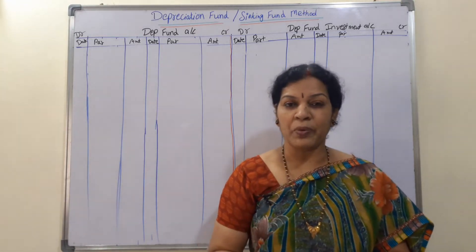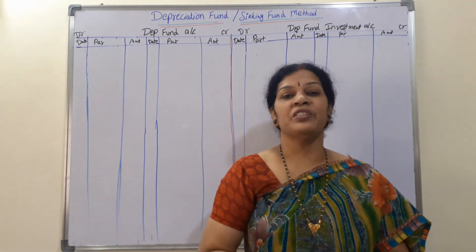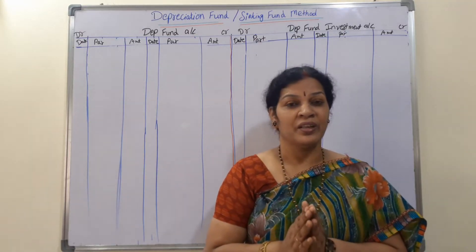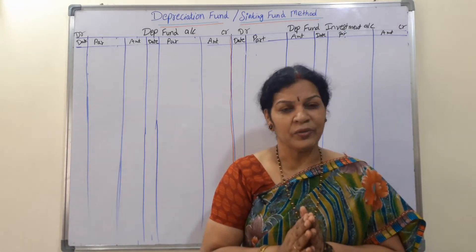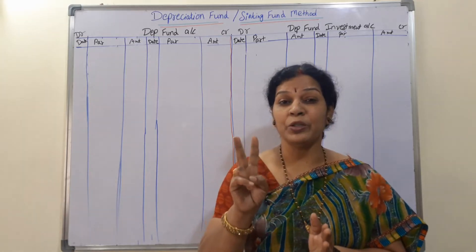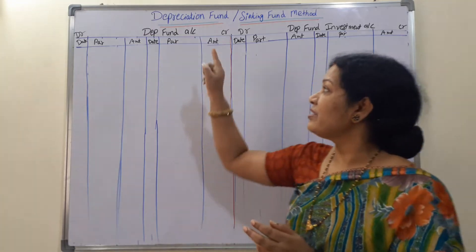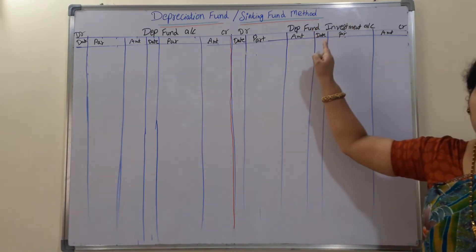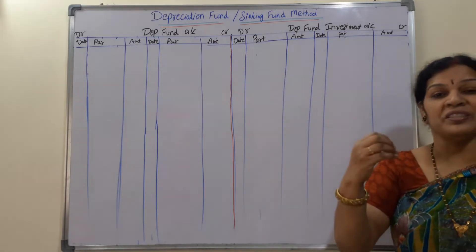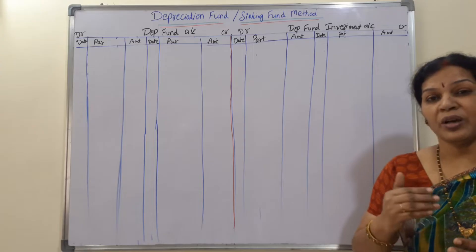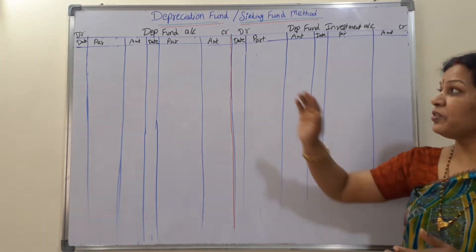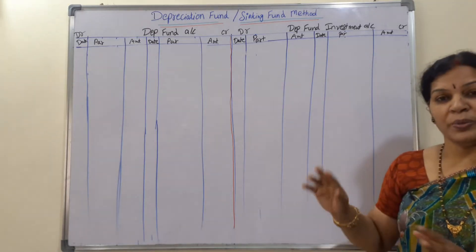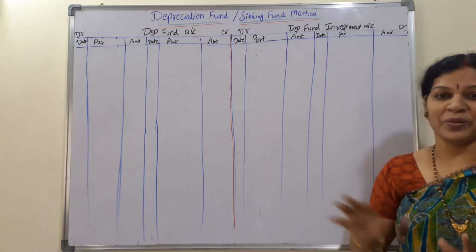The key difference is that whatever depreciation we are providing, we are going to put it as investment outside. Now in sinking fund or depreciation fund method, we are going to prepare mainly two accounts - very important: one is depreciation fund account, another one is depreciation fund investment account. These two accounts you have to prepare simultaneously - open together and close together.